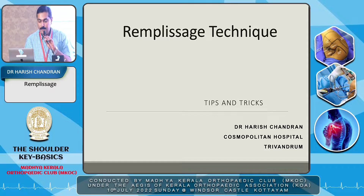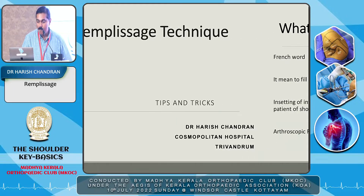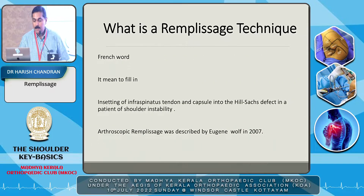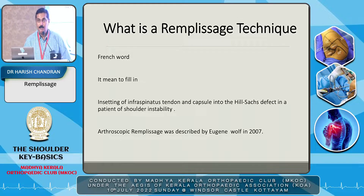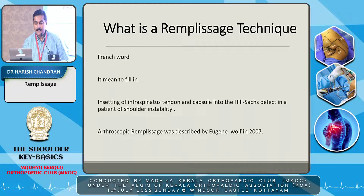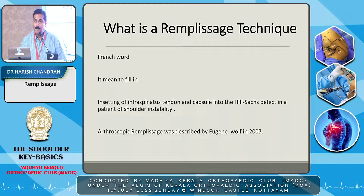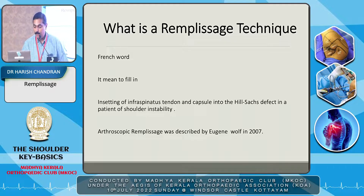We are going to speak on Remplissage. So what is a Remplissage technique? It's a French word meaning 'to fill in,' where you insert the infraspinatus tendon and the capsule into the Hill-Sachs defect in a patient with shoulder instability.